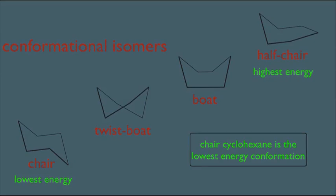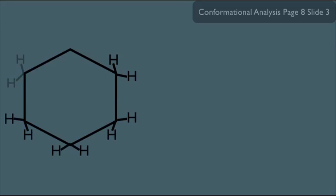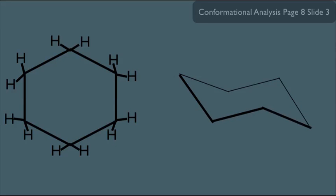Now let's talk about how to draw chair cyclohexane. Each carbon, being sp3 hybridized, has two bonds within the ring and two bonds outside of the ring. When you represent this molecule as chair cyclohexane, you simply draw this template first — always draw it in this direction. Each carbon has two bonds outside of the ring: one of the bonds points directly straight up, called the axial bond, and the other bond is at a slant pointing downward, called equatorial. Every carbon in the ring has these two types of bonds.